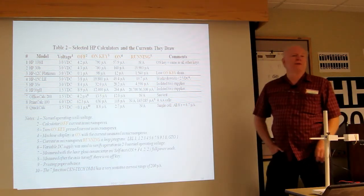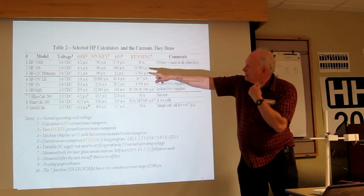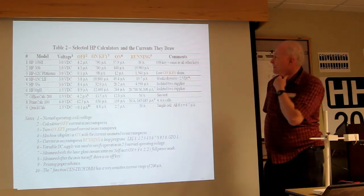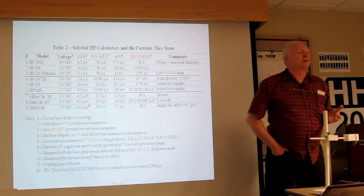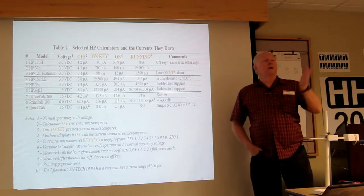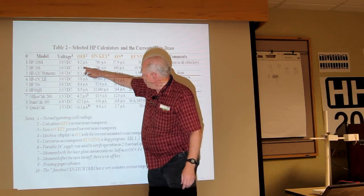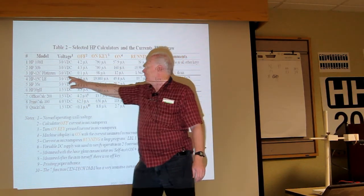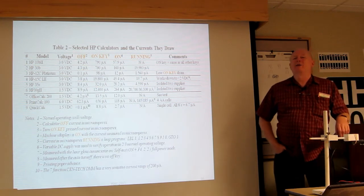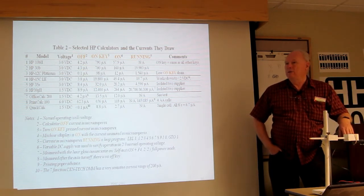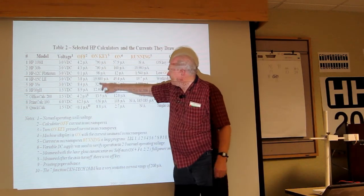This is the results of connecting them up and making the measurements. There's the three models of the finance and the scientific and then the last three are the office machines. The off state is one of the most important because that's how long you can put it in your desk drawer, come back and expect your machine to still run. If you're drawing a small amount of current, it lasts a long time. Of course, it's relative to the size of the battery. So the lowest off state, 4.2, 0.1 microamps, the 12C Platinum. The Voyager series are probably one of the best that HP makes for battery life.